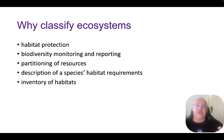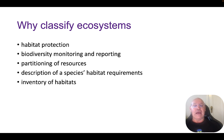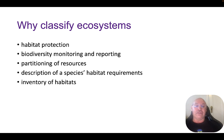So why do we classify ecosystems? The first reason is to protect them. Another is to provide a way of monitoring and reporting on the ecosystem — particularly about the health of the ecosystem, and monitoring if there's any change to that health. It might also be about the partitioning of resources. For example, a classic case would be water running down the Murray River and determining how much water can be taken out by farmers along the way. Understanding and classifying ecosystems also helps us describe the requirements that species have — particularly endangered species — and to learn more about habitats within an ecosystem.